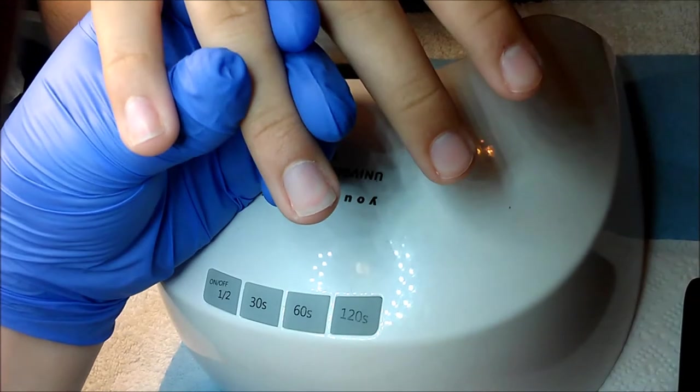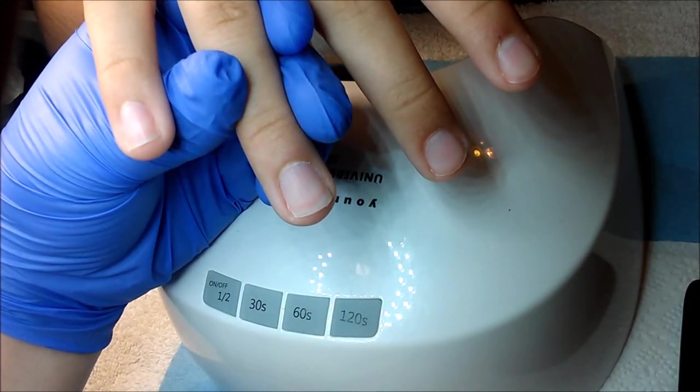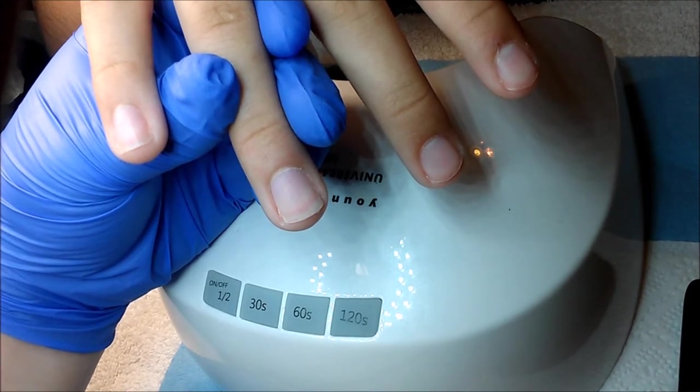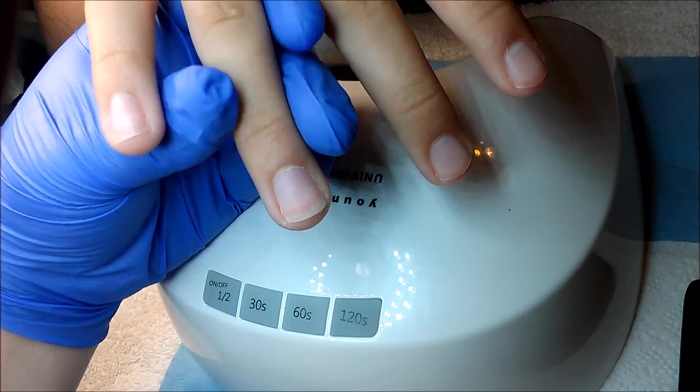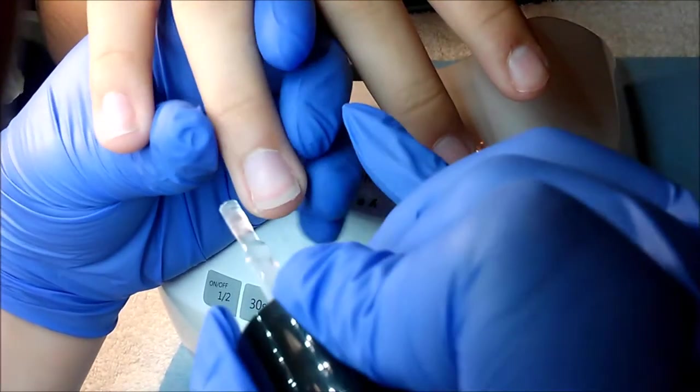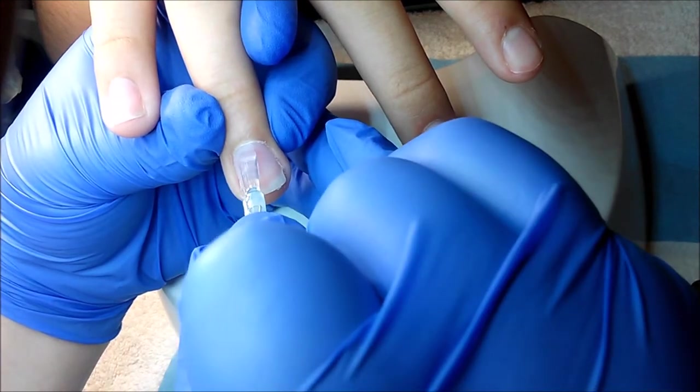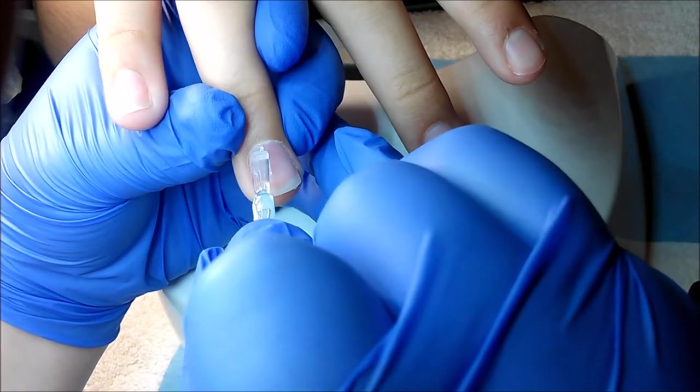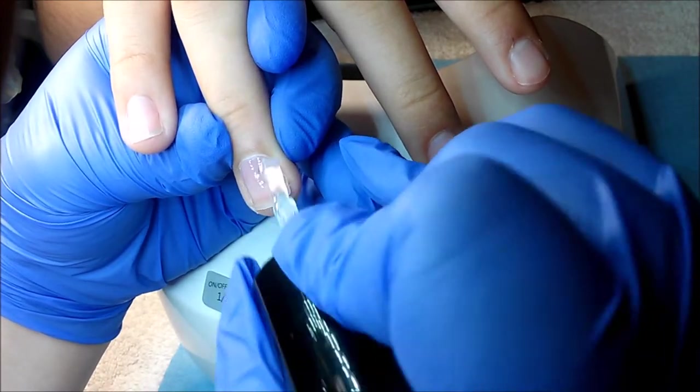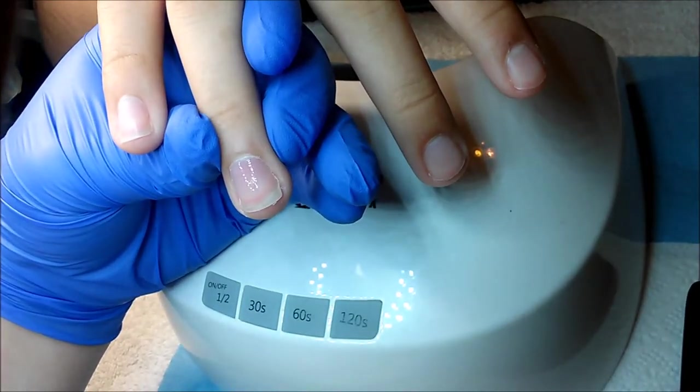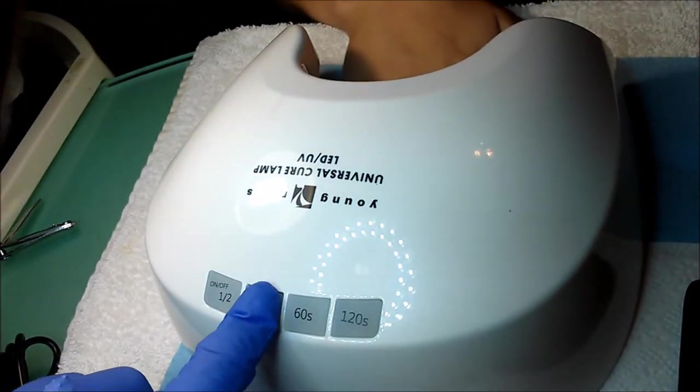So here I have prepped the nail lightly by pushing back the cuticles, lightly buffing. And I have used Young Nails Swipe which is what you would use as a dehydrator. I have not used their Protein Bond which is their kind of primer product. But only because this nail is going to be removed immediately after. But normally you would use your swipe, then you would use your Protein Bond. And then you would go in with your base coat which is what I'm doing right now.